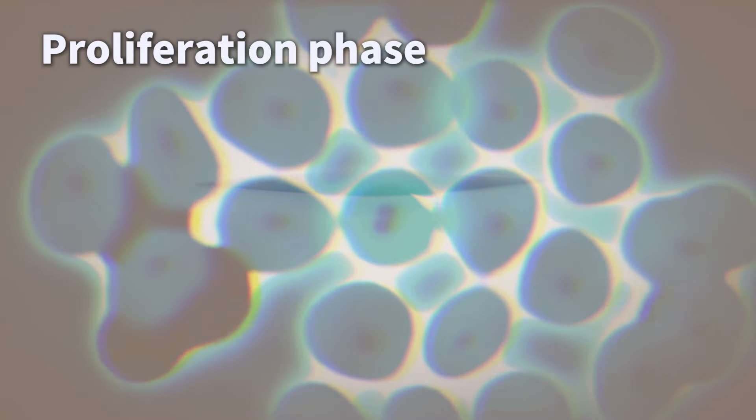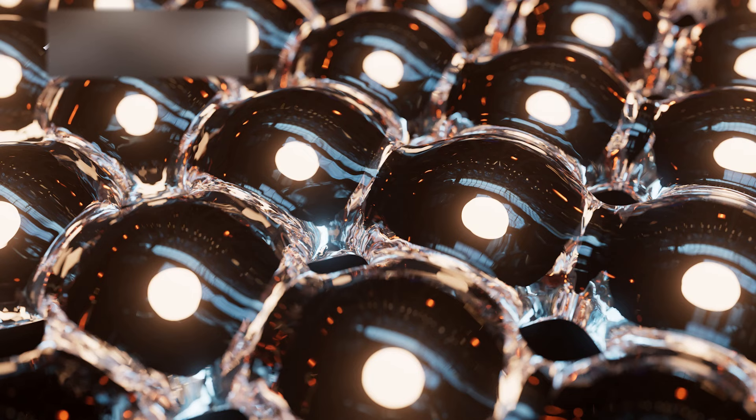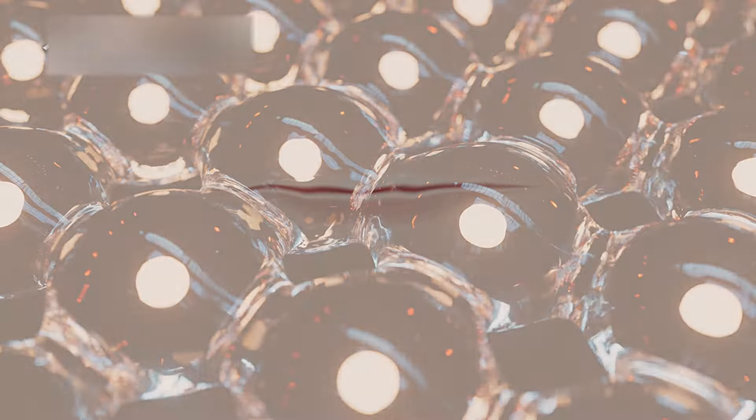Next, cells around the wound divide and cover the wound area. Gradually, over a period of time, the covered cells mature near the original skin, completing the recovery process. In this way, wounds on our bodies heal spontaneously over time.